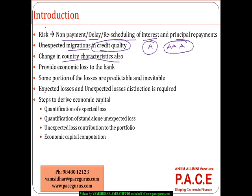Any kind of changes that occur even at a broader country level are also part of credit risk. All these credit risks typically result in economic losses to the lender — in the majority of cases, the bank being the lender. Banks are also aware that some portion of losses is expected; lending as a business, by its very nature, will have some level of defaults that are generally predictable and inevitable as part of the business.